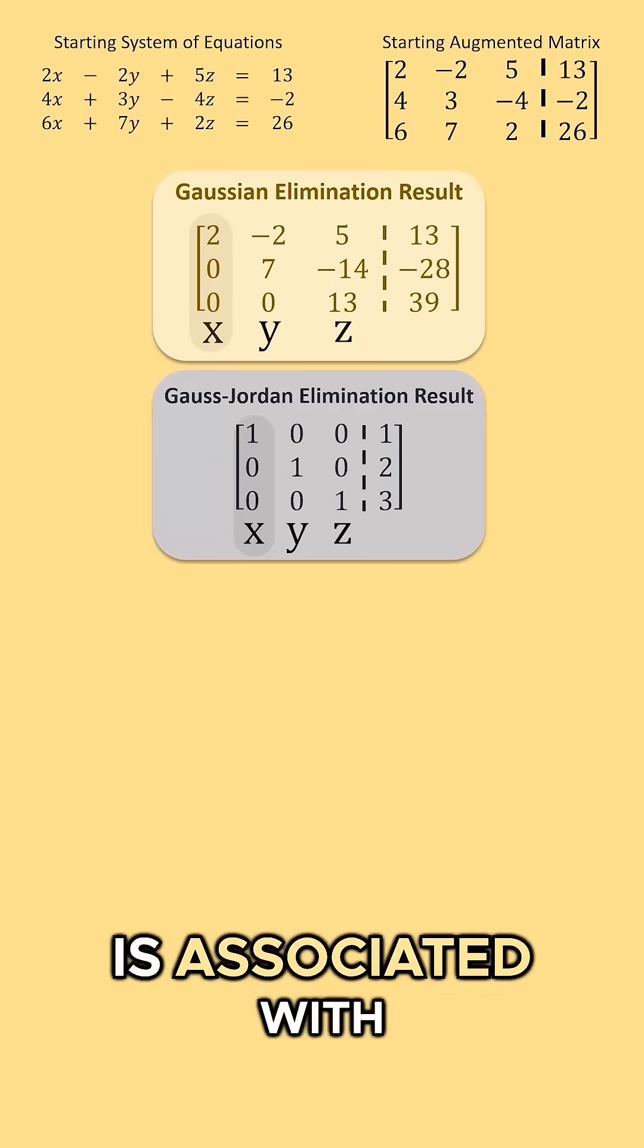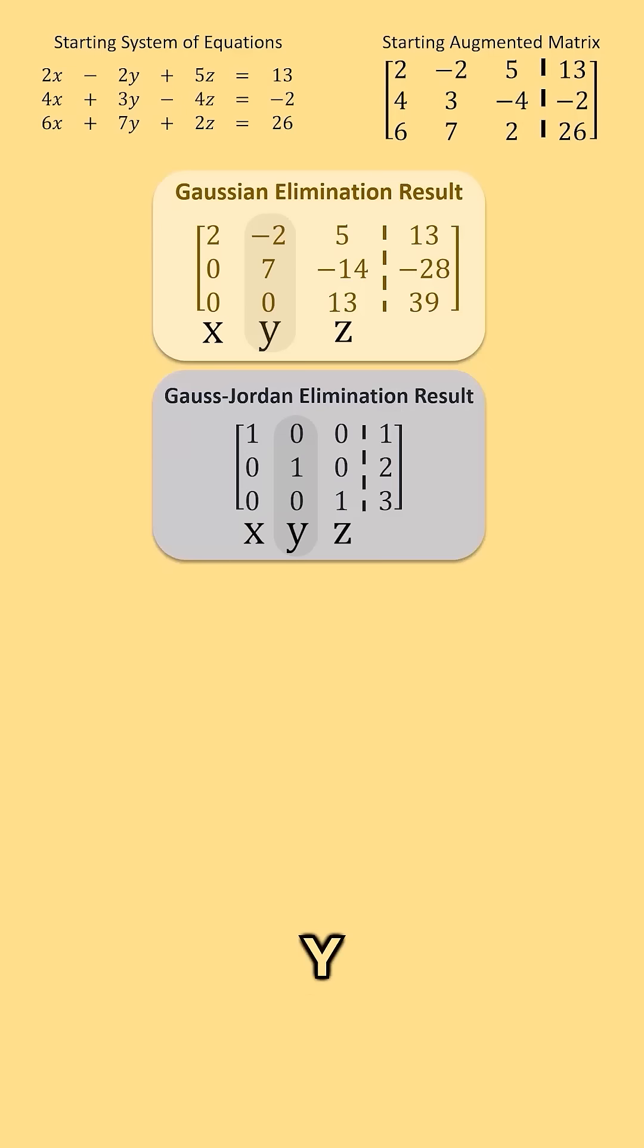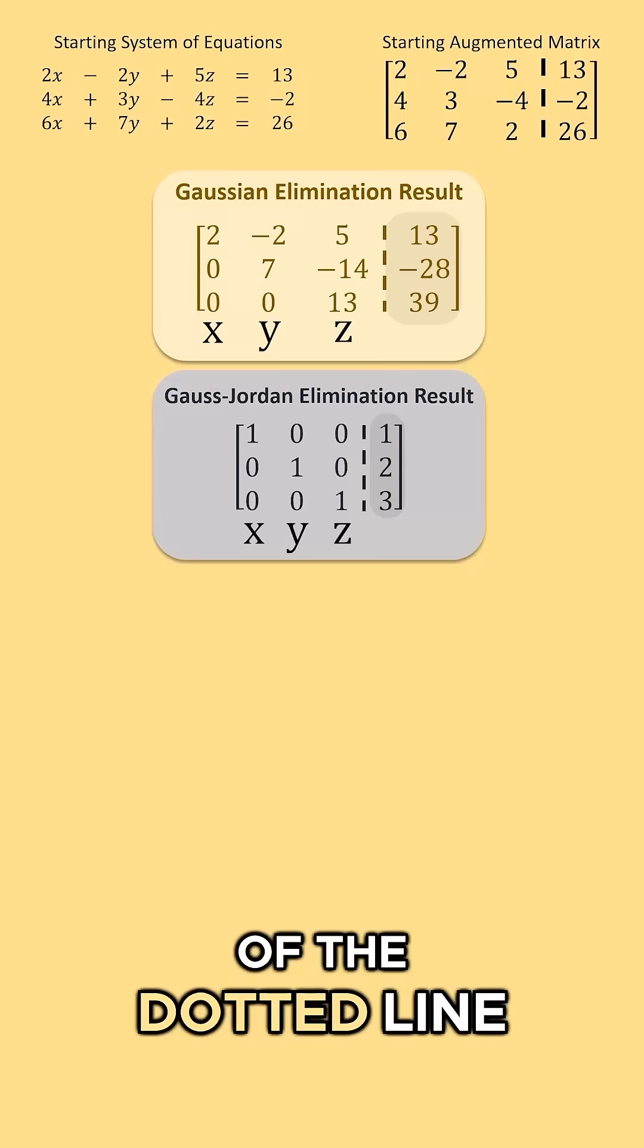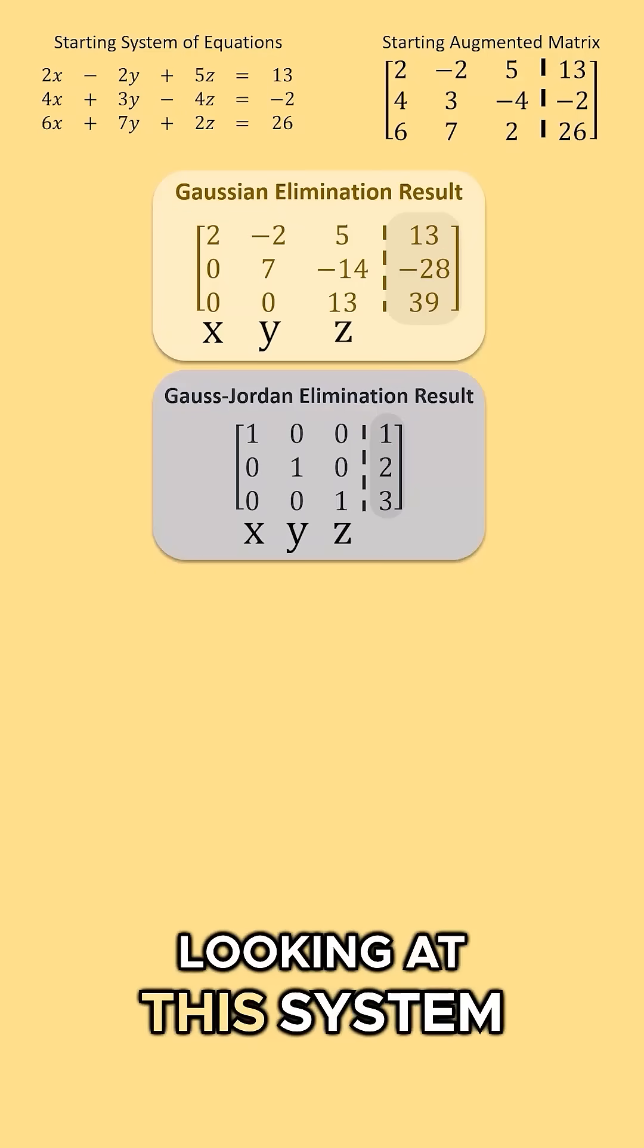The first column of the result is associated with x, the second column is associated with y, the third column is associated with z, and the column to the right of the dotted line is what each of those rows will be set equal to. Looking at this system on the bottom,